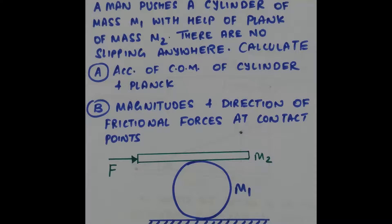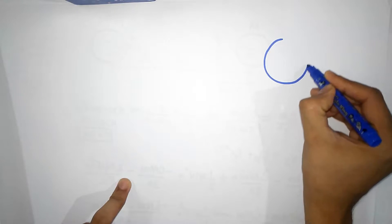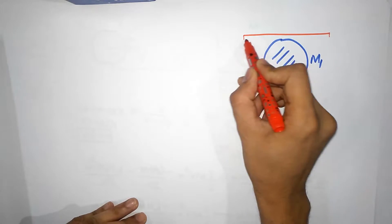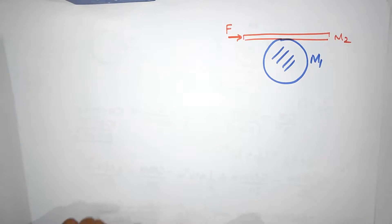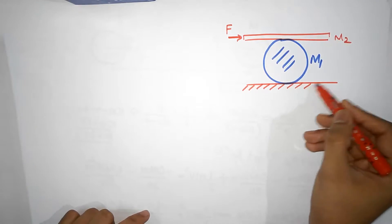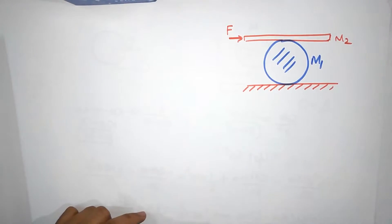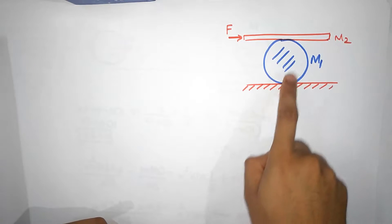This is IIT 1999, and it's about rotations — a great problem. We have a cylinder of mass m1, and a plank of mass m2 kept on top of it, being pushed with force F. Both surfaces have friction, and the system accelerates without any slipping. We need to calculate the acceleration of the center of mass of the cylinder, the acceleration of the plank, and the magnitudes of the frictional forces.